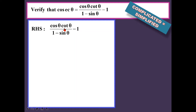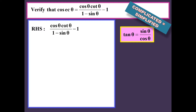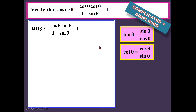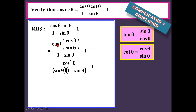I have cos θ · cotangent θ over (1 minus sin θ) minus 1. We will change this to sine and cosine. Cotangent is cos θ over sin θ, so let's put that in. Once that is done, I'm going to bring the denominator down — it will end up cos times cos, giving cos² θ. Then sine θ is brought over, multiplied by (1 minus sin θ).